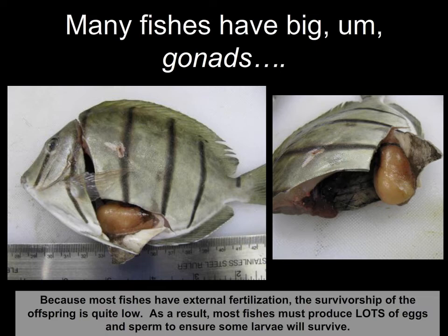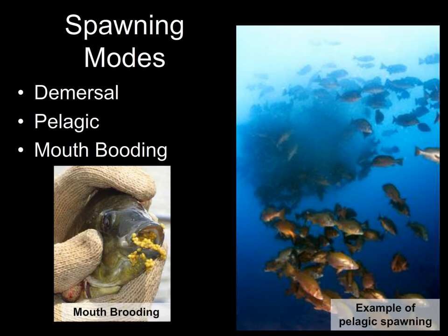You'll probably notice during dissection that the fish has very large gonads — either ovaries or testes — if it's sexually mature; if immature, they'll be very hard to find. Unlike mammals, which may ovulate one or two oocytes at a time, many fish will ovulate thousands or even hundreds of thousands of oocytes at once. The reason is that most fishes have external fertilization — eggs and sperm are shed into the water column with no parental care — so survivorship of the offspring tends to be quite low. Fish have evolved to hedge their bets by producing lots and lots of eggs and sperm, hoping one or two fertilize and make it all the way through embryonic development to become adults.